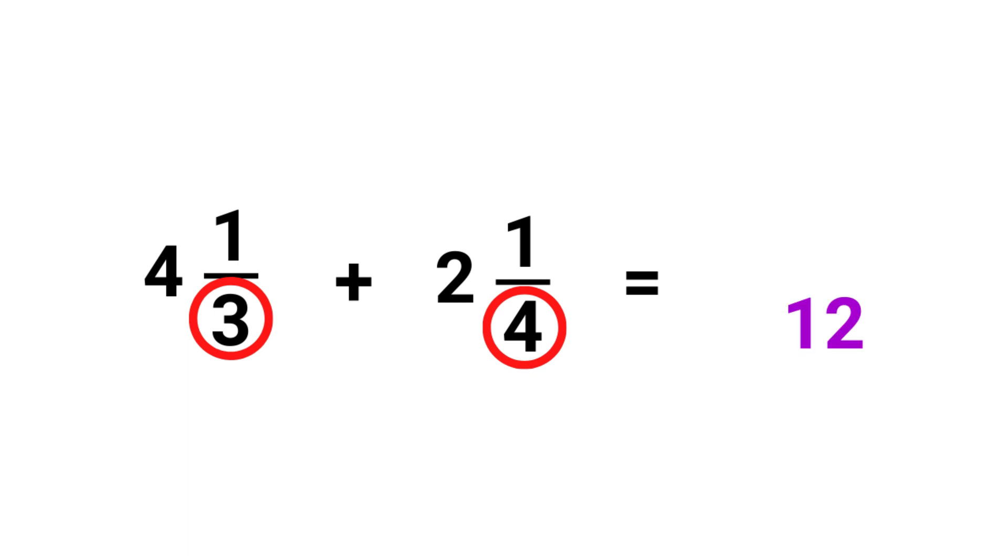Next we are going to cross multiply each numerator with the other denominator. So here 1 times 4 is 4, and here 3 times 1 is 3. We add this together, so 4 plus 3 equals 7, and 7 is our numerator.